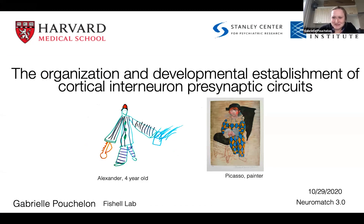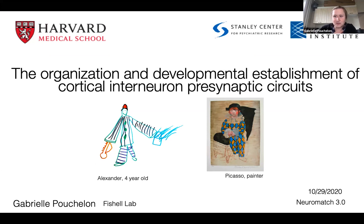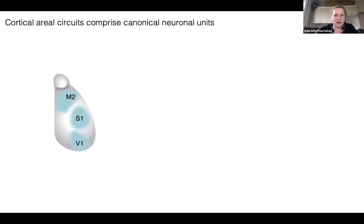Thank you for the introduction. I look at interneurons in the Fischer lab, basically in the cortex like Andy, but the inhibition there — not excitatory neurons — and also at later time points where they actually form circuits. Because neurons differentiate in a very specialized way, and in addition to migration, we have specialization in terms of circuits and what they receive and how they form.